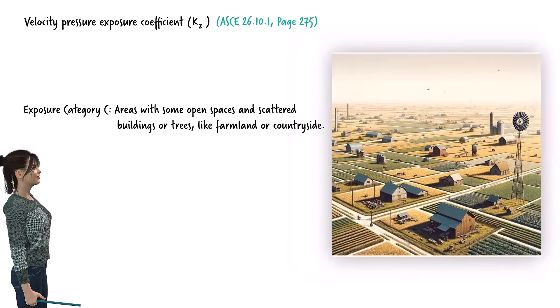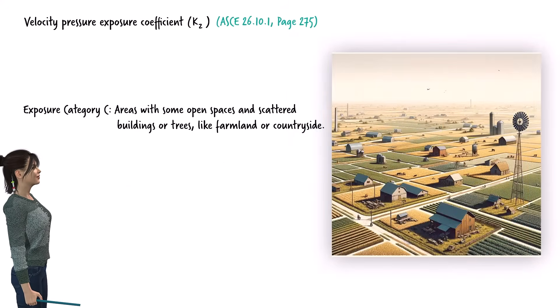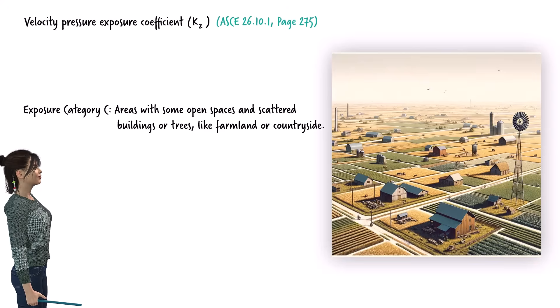Category C is for areas with some open spaces and scattered buildings or trees, like farmland or countryside. There are enough open areas for the wind to pick up speed, but the scattered structures still provide some obstacles that slow it down a bit.